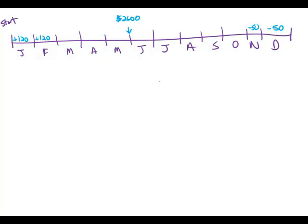Beginning in January of last year, Carl made deposits of $120 into his account for several consecutive months and then made withdrawals of $50 from the account for each of the remaining months last year.